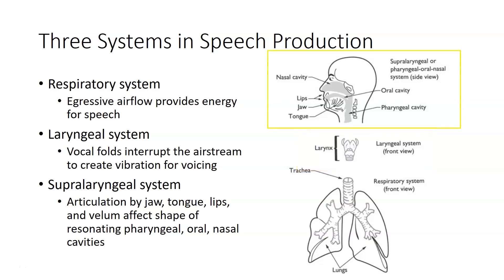The supralaryngeal system — the system above the larynx — is the articulatory system where the jaw, the tongue, the lips, and the velum affect the shape of the resonating pharyngeal, oral, and nasal cavities, creating the distinctions between different speech sounds.